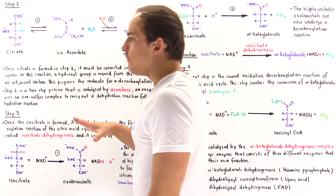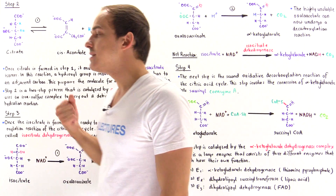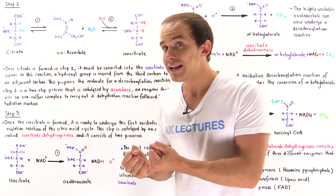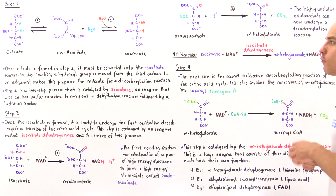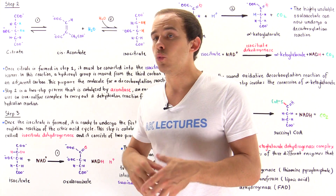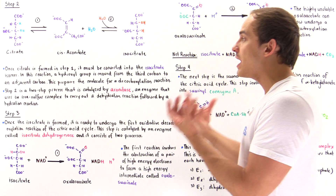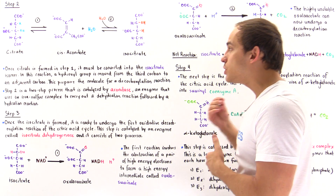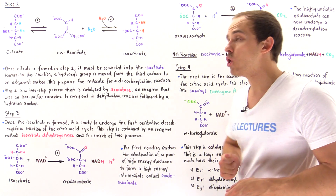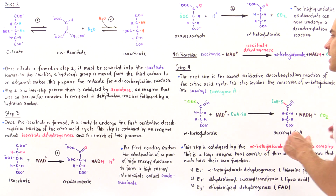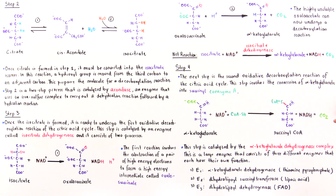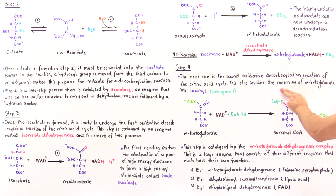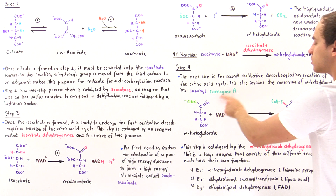Step four is the second oxidative decarboxylation step of the citric acid cycle. Another carbon dioxide is removed, and a pair of high-energy electrons is abstracted to form reduced NADH, which will be used by the electron transport chain to generate ATP. This step also uses coenzyme A — the same coenzyme A used in pyruvate decarboxylation — and converts alpha-ketoglutarate into succinyl-CoA.